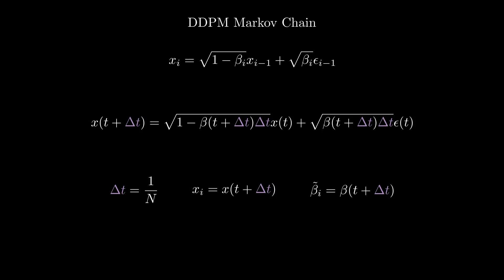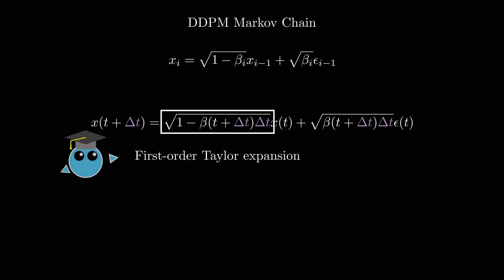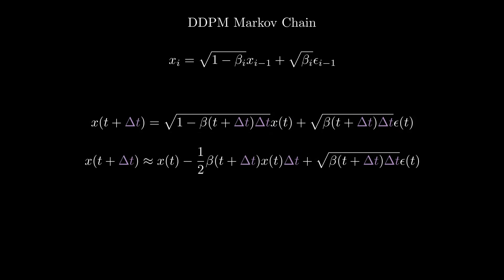Now, once we have this equation, the trick is to take the first order Taylor expansion of the left-hand term, which is possible because we make delta t tend to zero. This lets us rewrite x at time t plus delta t as approximately equal to this new expression.